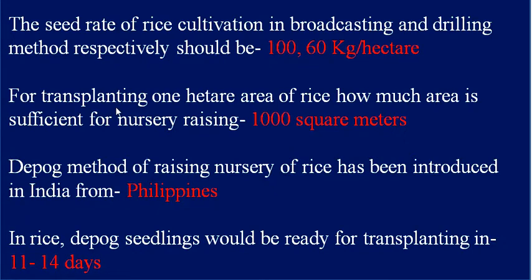For transplanting one hectare area of rice, how much area is sufficient for nursery raising? 1,000 square meters. If you want to transplant 1 hectare, you need a 1,000 square meter nursery.